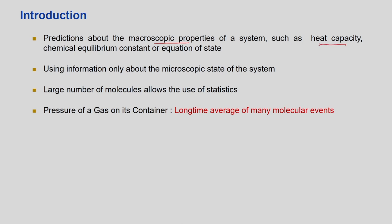We call those macroscopic properties. We should understand the difference carefully between macroscopic and microscopic. Microscopic describes the molecules and how they are moving, while macroscopic means the property. The macroscopic properties include heat capacity, which is the partial derivative of internal energy, as well as internal energy, chemical equilibrium constant, or equation of state.